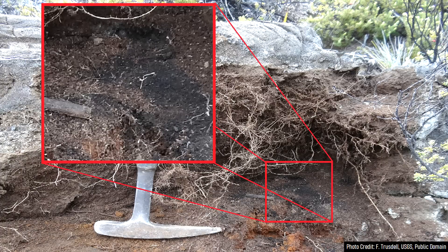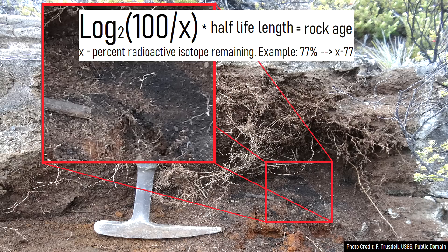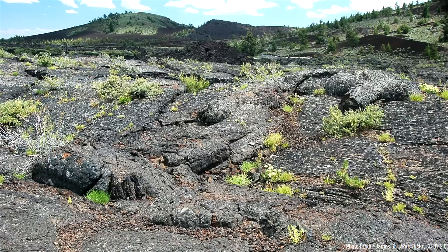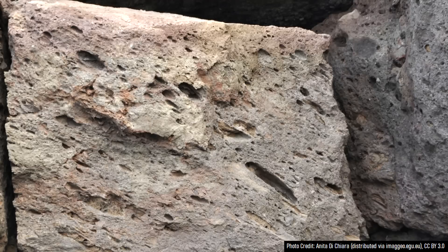In the case of the aforementioned Kilauea wood fragment, 77.84% of its radioactive isotope remained. Thus, it had undergone 0.36 half-lives, which translates to a duration of 2,070 years. As a reminder, for carbon-14 dating to work, it must be older than 100 years and younger than 50,000 years and involve an organic piece of material. Simply dating a layer of rock without an organic product in it using this method will never work.